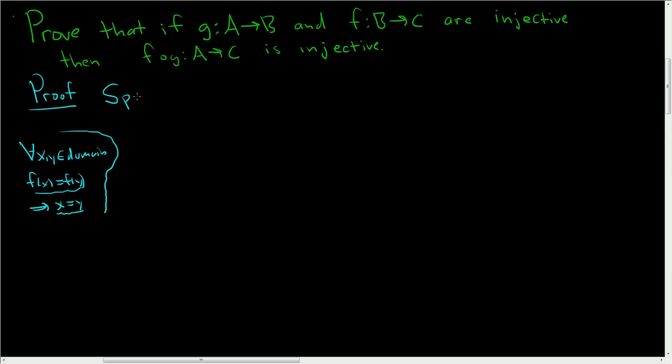So we'll start by supposing that f∘g of a is equal to f∘g of b for some arbitrary little a, little b inside capital A.